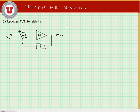First, negative feedback reduces PVT sensitivity. Remember as we've been saying all along, it's very easy to make an amplifier that has very large gain, but it's difficult to make an amplifier that has precise gain without feedback.